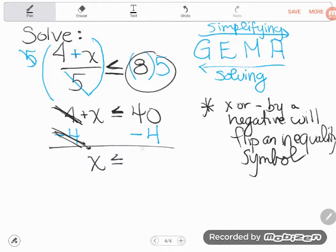So x is alone. And there on the right-hand side is the math to do. 40 minus four is 36. And the final answer is x is less than or equal to 36. You know you're done because the letter's alone on its side of the inequality symbol.